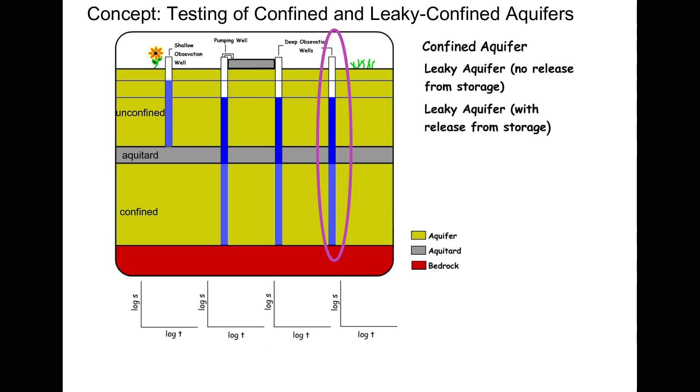The light blue indicates where water can enter each well. The upper blue line shows the unconfined aquifer head while the lower line shows the confined aquifer head.